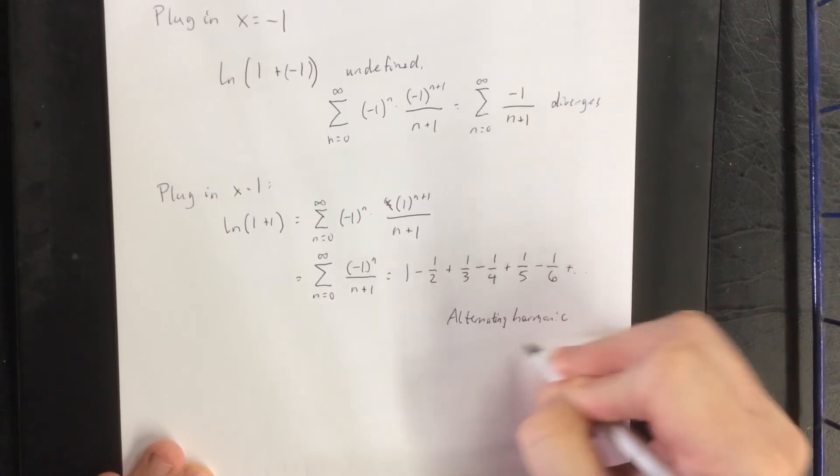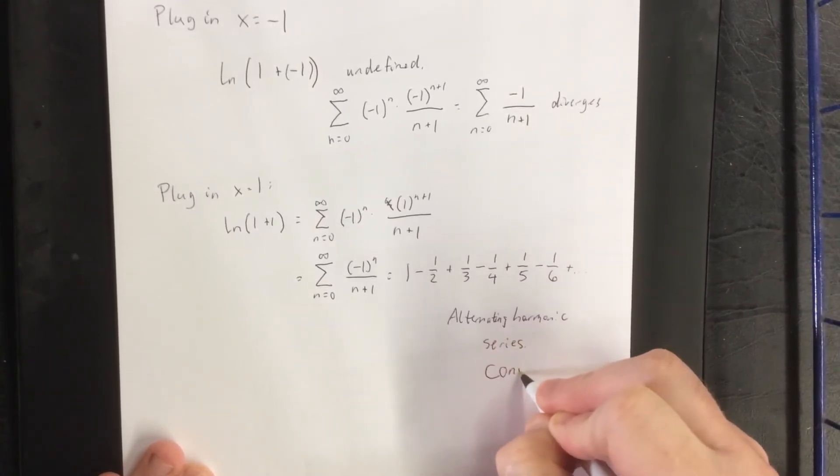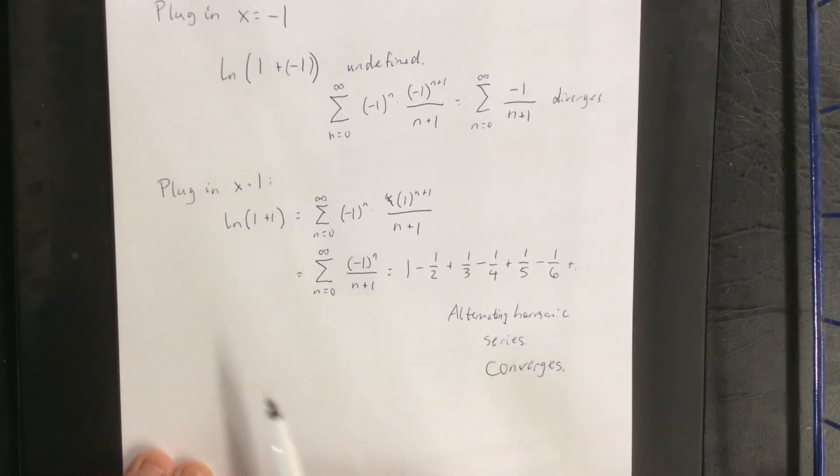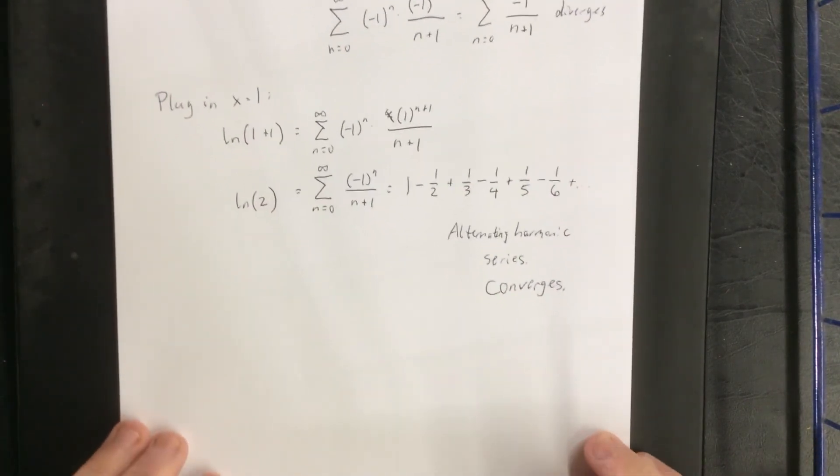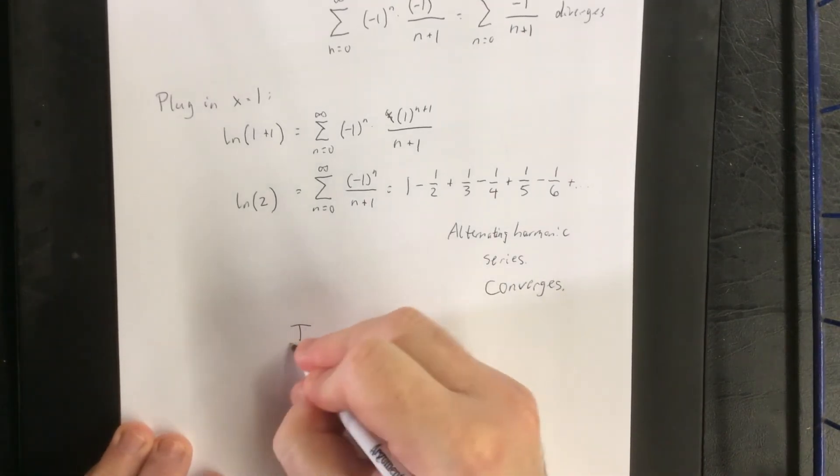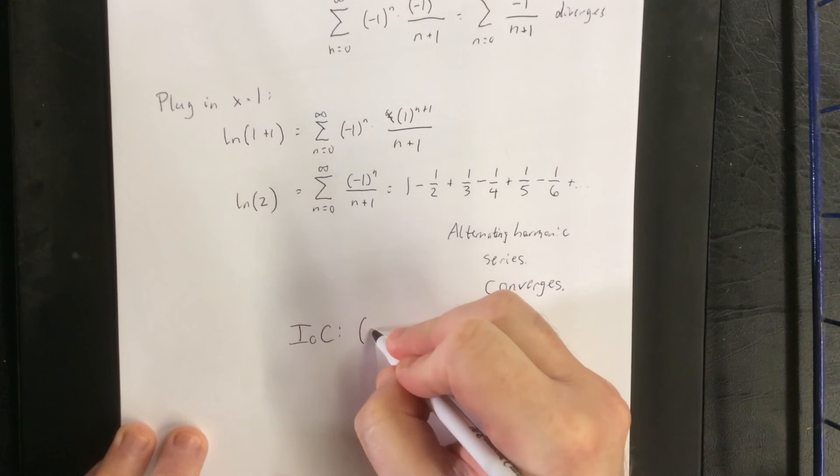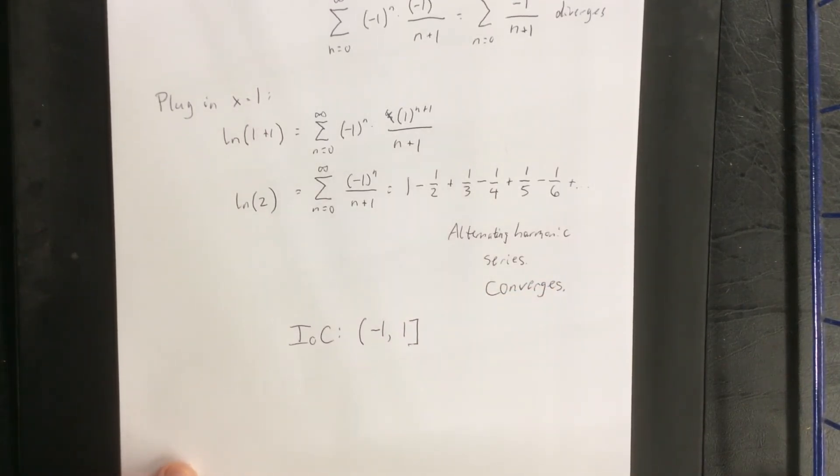Now we know from previous discussions that the alternating harmonic series converges. In addition to the fact that it converges, we now know to what value it converges. The alternating harmonic series converges to the value of the natural log of 2. Therefore, the interval of convergence for this power series representation will be the half-open, half-closed interval from negative 1 to positive 1. Now I can show you the next step. Thank you.